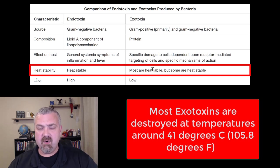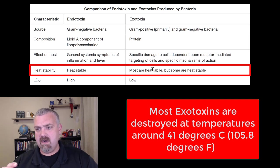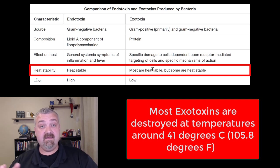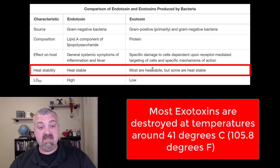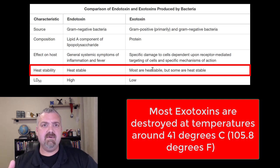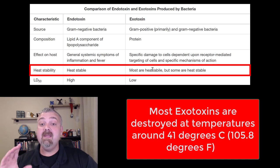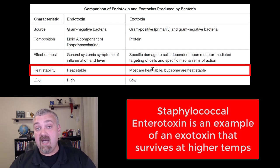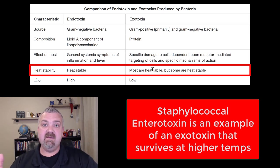Next, heat stability — this is a big deal, especially with foodborne illness. Endotoxins are quite a bit more stable in heat because they're lipid-based, so they can survive at higher temperatures. Whereas exotoxins, because they're proteins, can be denatured or unraveled at pretty low temperatures. Most are heat labile — most are destroyed at temperatures around 41 degrees Celsius, or about 105–106 degrees Fahrenheit. There is one huge exception though, and that is staphylococcal enterotoxin.